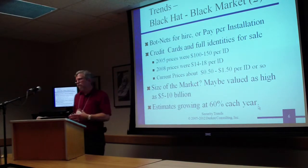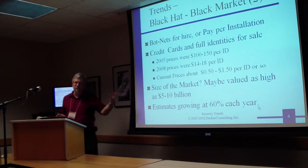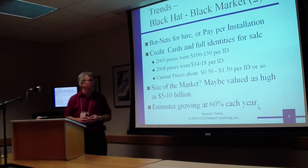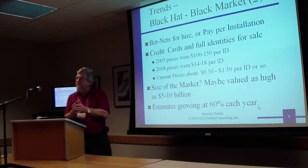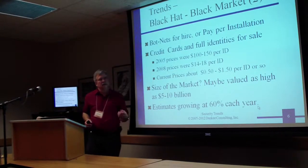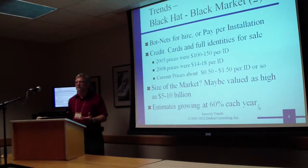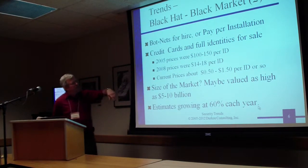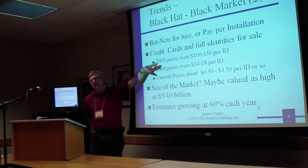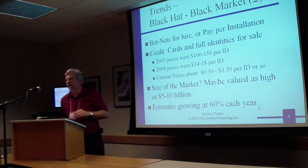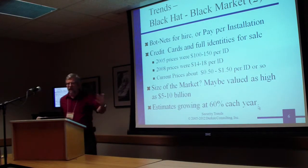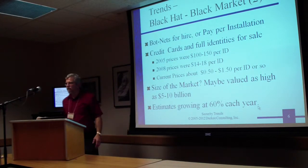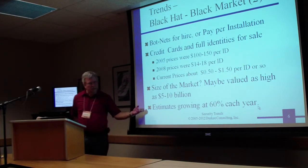Services are available — botnets can be used to generate spam, do click fraud, or DDoS attacks. As it becomes easier to compromise systems and get credit card data fraudulently, prices go down just like any other economy. In 2005, a credit card with full identity was $100 to $150. By 2008 it dropped to $14 to $18. Now it's about a dollar — and they sell 1,000 to 10,000 at a time. The black hat black market has been estimated at $5 to $10 billion.